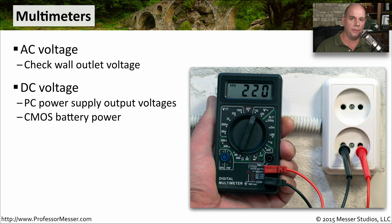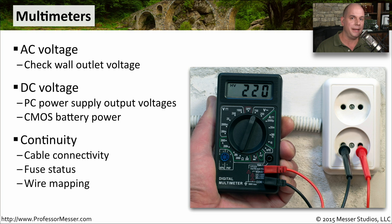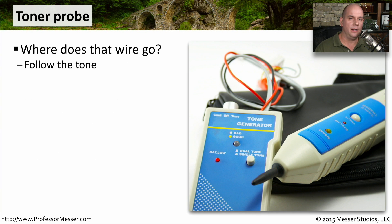From a networking perspective, we may need to check continuity. We may need to check the pins on a serial connection or on an Ethernet connection to see if we're getting signal from one side of the cable to the other. If you have a lot of cables on your network, finding the right cable when troubleshooting can be a bit of an issue.